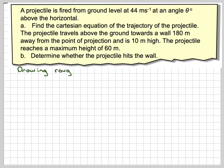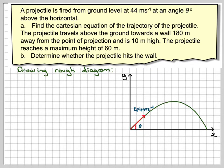So let's do part A first. If we just draw a rough diagram, we've got a projectile with 44 metres per second. We don't know the angle of theta.